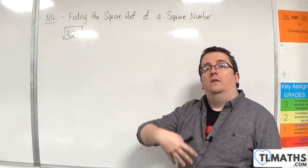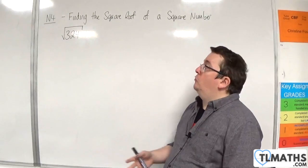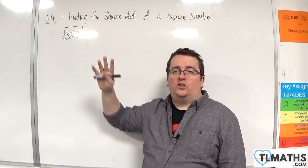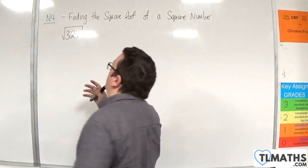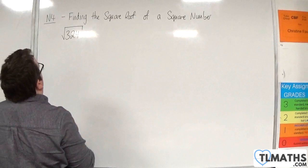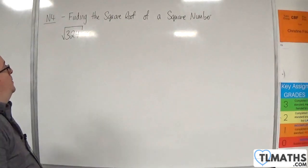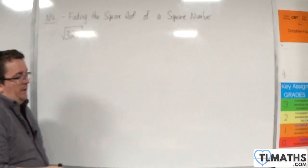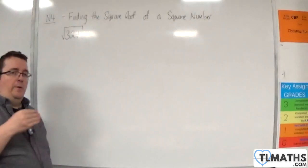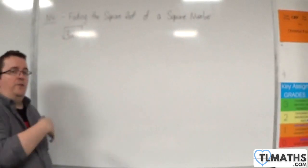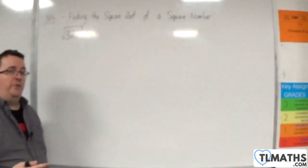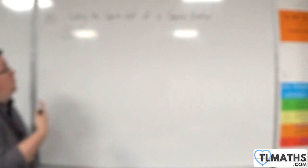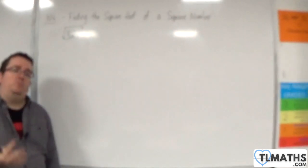So 1, 4, 9, 16 — these are square numbers. I'm telling you that 324 is a square number and we use this notation to represent the square root of 324. The way I'm going to do this is to utilise the unique factorisation theorem — the fundamental theorem of arithmetic — and write 324 as the product of its prime factors.